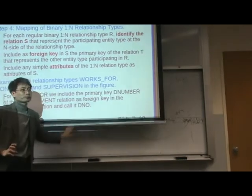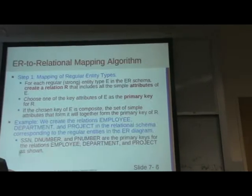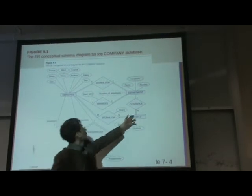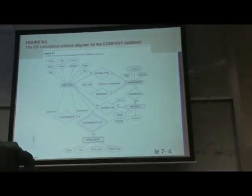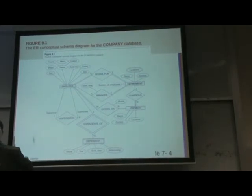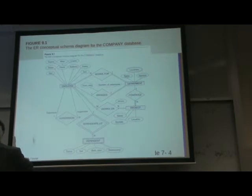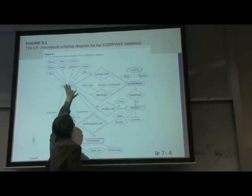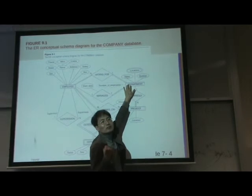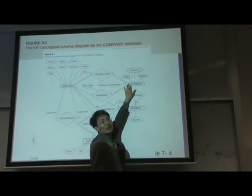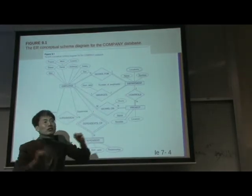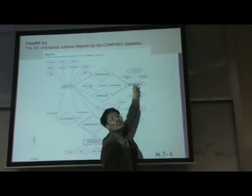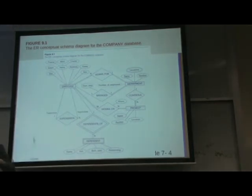What about the one-to-many? We have a bunch of one-to-many relationships. It's very easy: take the many side and add the primary key of the one side as a foreign key. For example, employee works for a specific department — if we have the department ID, that department ID should exist in the employee table. A foreign key is enough. Add the foreign key to the many side that connects to the primary key of the one side.